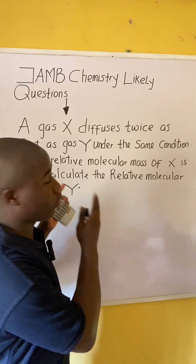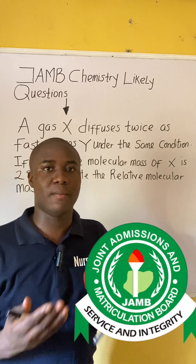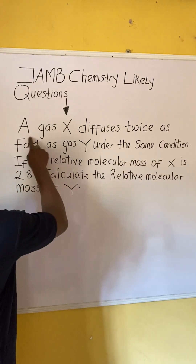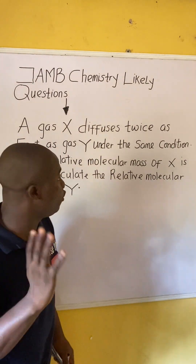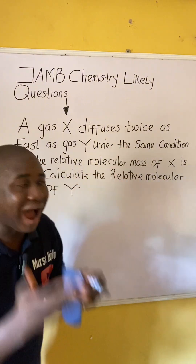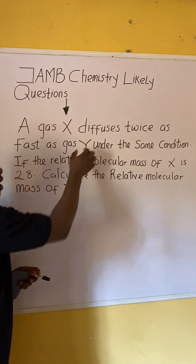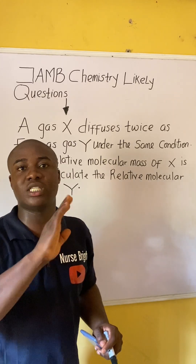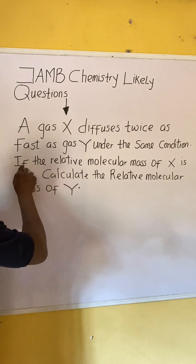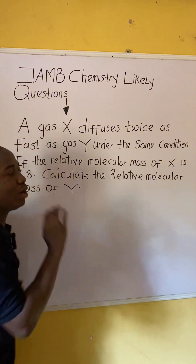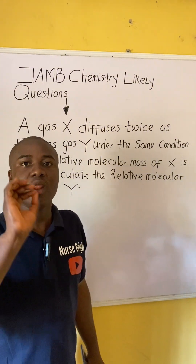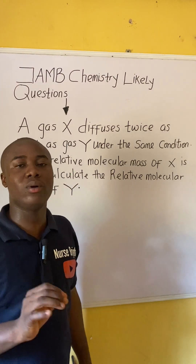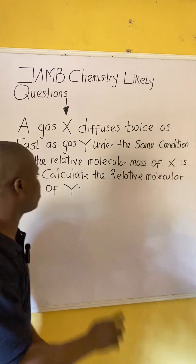Let's say you came across this question in your JAM exam. A gas X diffuses twice as fast as gas Y under the same conditions. If the relative molecular mass of gas X is 28, calculate the relative molecular mass of gas Y.